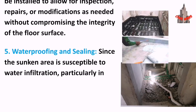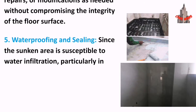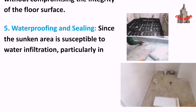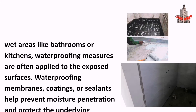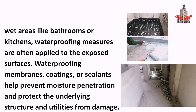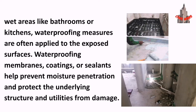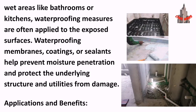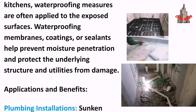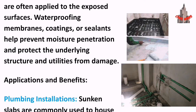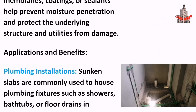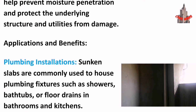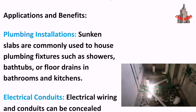Five: Waterproofing and sealing. Since the sunken area is susceptible to water infiltration, particularly in wet areas like bathrooms or kitchens, waterproofing measures are often applied to the exposed surfaces. Waterproofing membranes, coatings, or sealants help prevent moisture penetration and protect the underlying structure and utilities from damage.